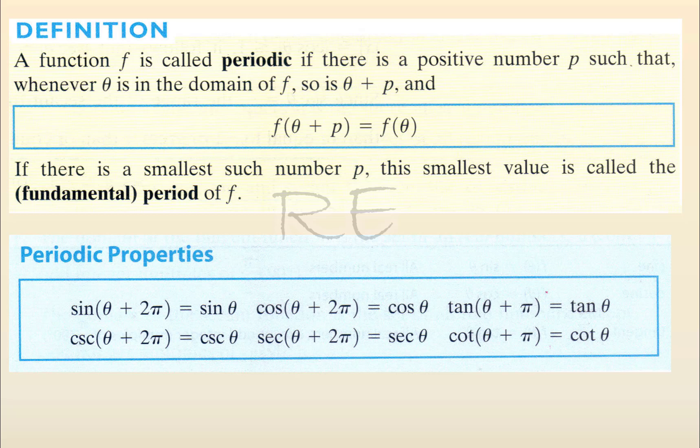The smallest value of p is called the fundamental period of f. Periodic properties: sine, cosine, cosecant, and secant have a period of 2 pi. Tangent and cotangent have a period of pi.